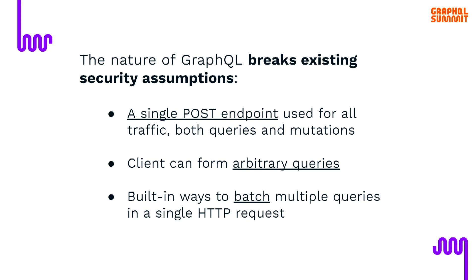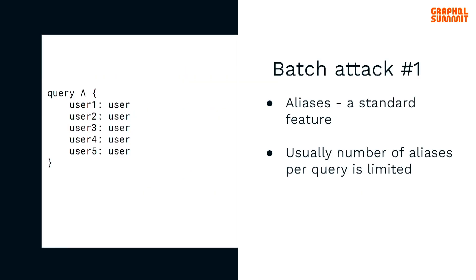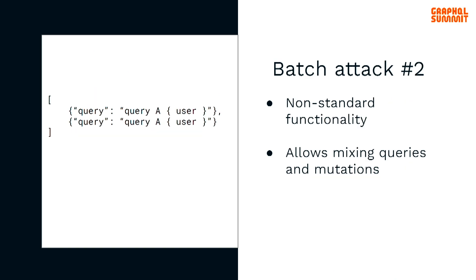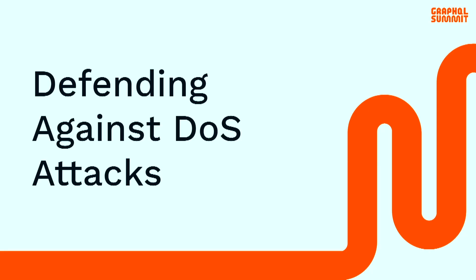An important thing here is that there's batch functionality involved, and there are two ways to do that. Instead of sending multiple requests, as an attacker you can combine them and send just one. The first method is based on aliases — it's a standard feature, better known, and usually limited by default. But there's also another feature which is not standard, implemented just by some servers. It allows mixing arbitrary queries and even queries and mutations.